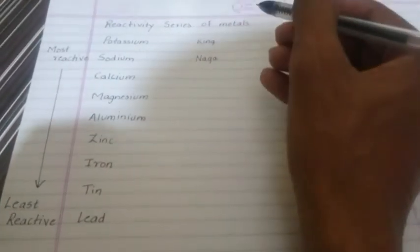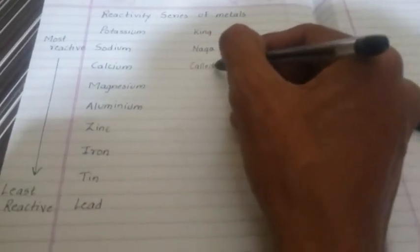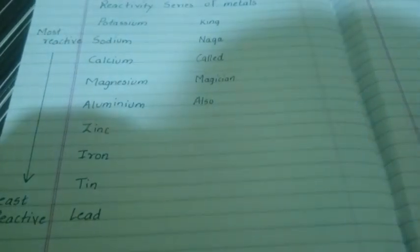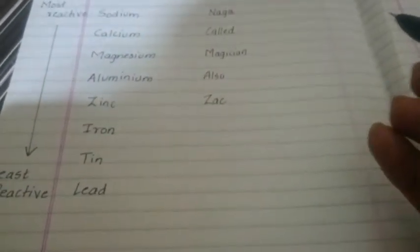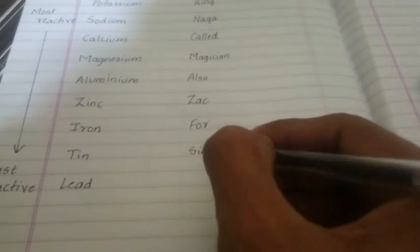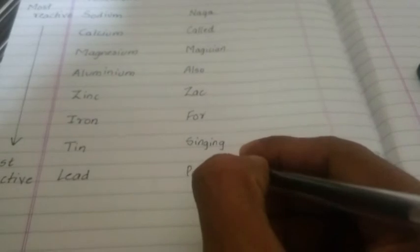Here's how it goes. The first word to remember is king, second naga, called, magician, also, zack, for, singing, pop, beats.